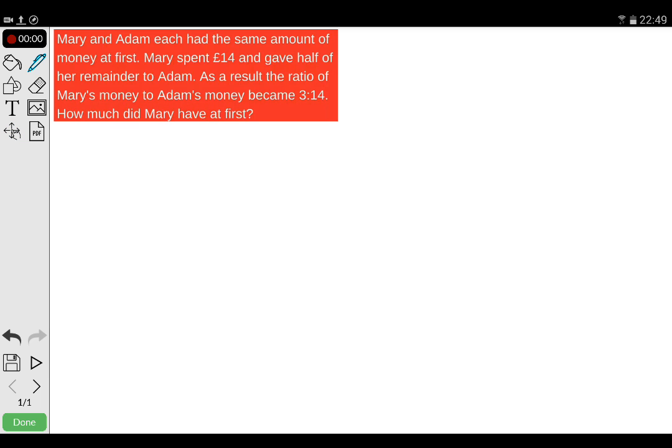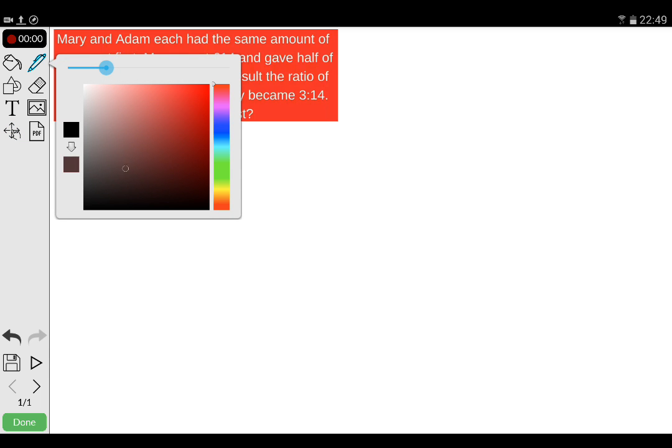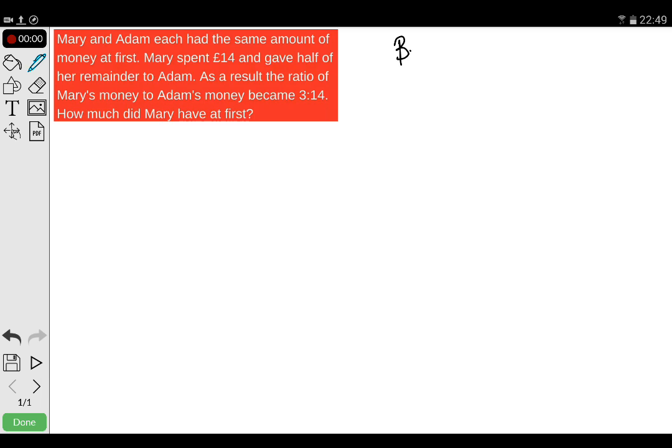If I start off with the before bar, I've got one for Mary and one for Adam. This before bar is going to look something like this for both Mary and Adam. You can see that they're kind of equal. It should be more accurate if I used another tool, but it's not possible in this program.